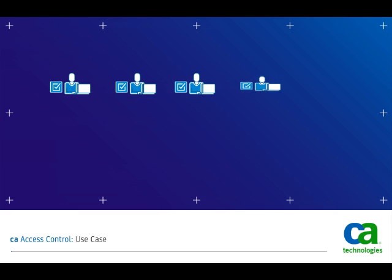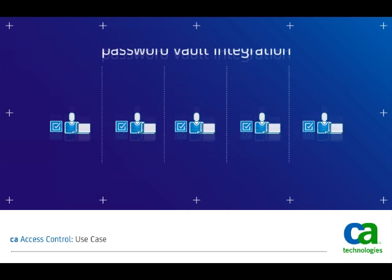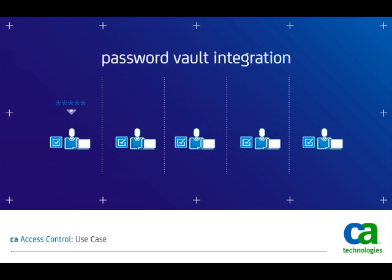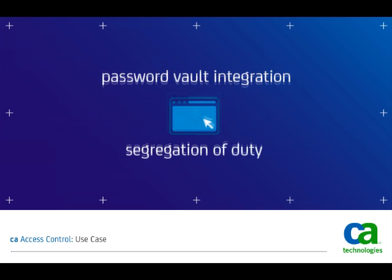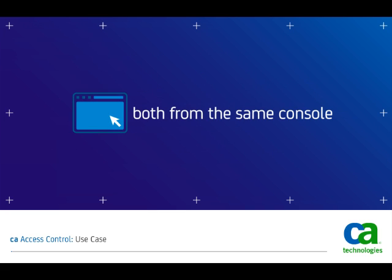This segregation of duty regarding what privileged users can and cannot do on a system is not available in a standalone password vault solution. CA Access Control integrates the password vault functionality of its PUPM feature with its market-leading fine-grained control capability, enabling administrators to manage both from the same console.